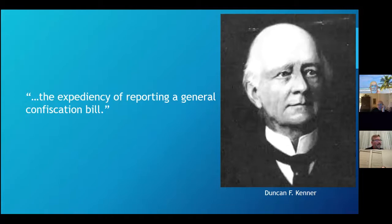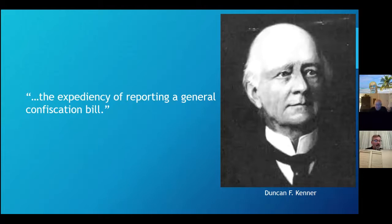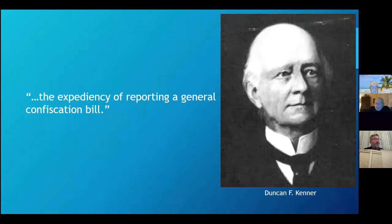Ostensibly, the Confederate Congress intended sequestration to strike a blow at Northern financial interests within the Confederacy. It called for duly appointed Confederate officers to locate all lands, tenements, hereditaments, goods and chattels, rights and credits within these Confederate states held, owned, possessed, or enjoyed by any alien enemy. Such property would be sequestered and sold, with proceeds paid into a fund administered by the Confederate Treasury Department. A board of three sequestration officials would hear indemnity claims made by loyal Confederates whose personal property had fallen prey to confiscation by the Union, and Congress would approve or reject those claims.